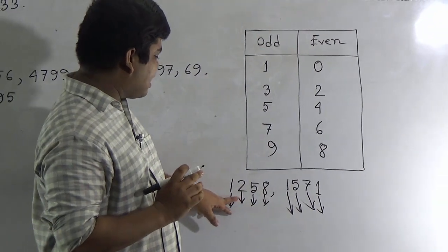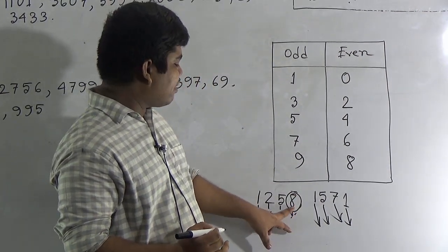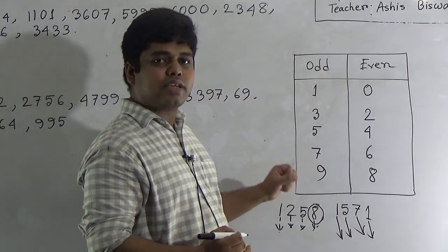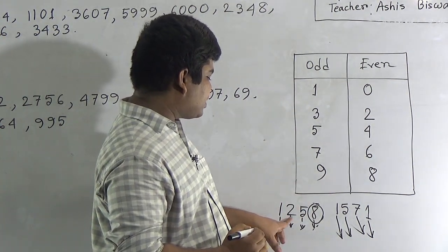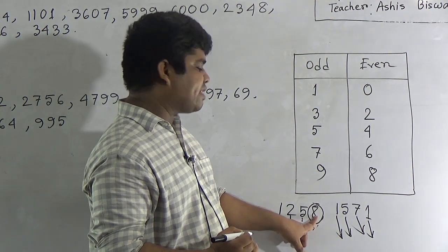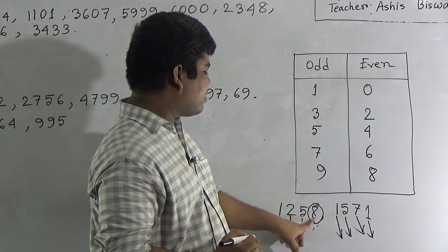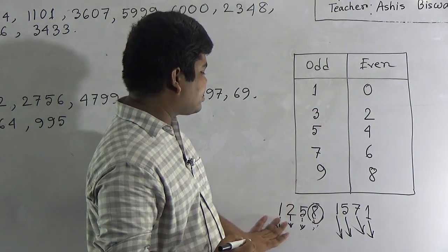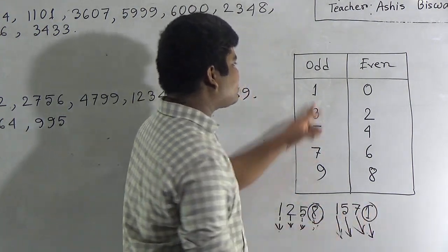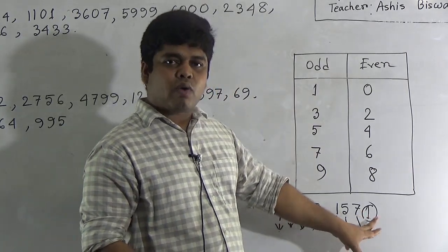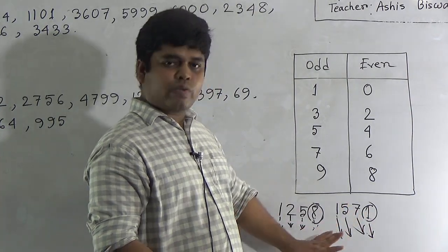Here, the last digit is eight. If the ones place digit is even, then the total number is even. If the ones place digit is odd, then the total number is odd. For one thousand two hundred fifty-eight, the ones place digit is eight, which is an even number, so one thousand two hundred fifty-eight is even. For one thousand five hundred seventy-one, the ones place digit is one, which is an odd number, so one thousand five hundred seventy-one is odd. Do you understand how we find odd and even numbers?